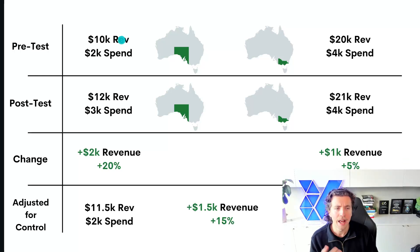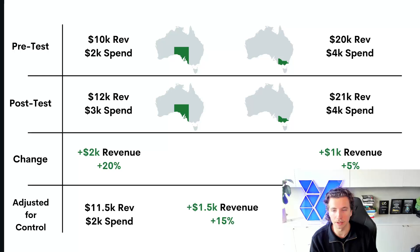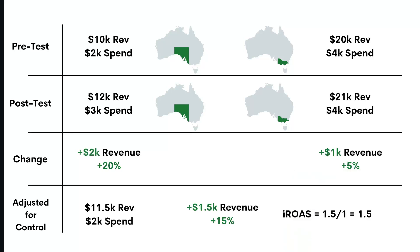We need to back that macro improvement out of our figures — that's the variance adjustment. South Australia would have improved by 5% anyway, so we remove that 5% gain and look only at the incremental gain attributable to the spend. We adjust to a $1,500 gain rather than a $2,000 gain — a 15% lift. So our incremental ROAS is $1,500 in new revenue divided by $1,000 in spend, giving an iROAS of 1.5: for every $1 put into Google Shopping, we get $1.50 in top-line revenue.